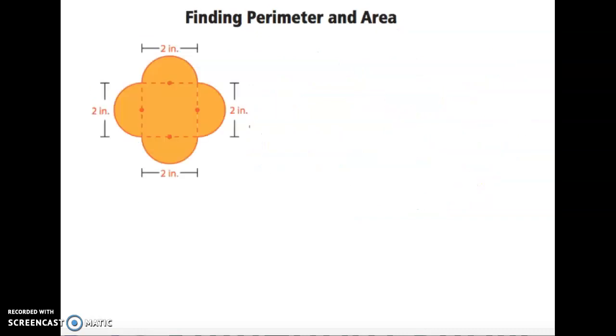Let's look at one more example. So this figure is made up of a square and four semicircles. We'll do perimeter first. Now we only want the outside, so around this is perimeter. In this case, the square doesn't even matter to us for our distance around the shape, so we have four semicircles.